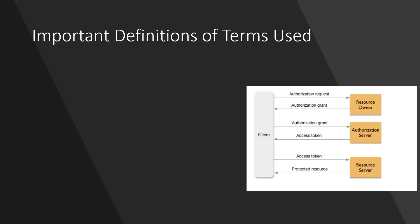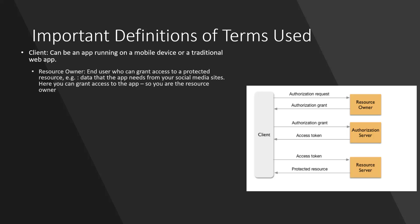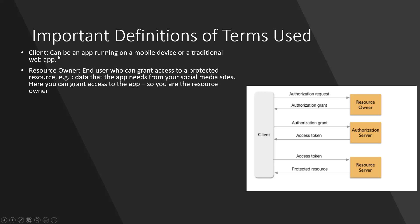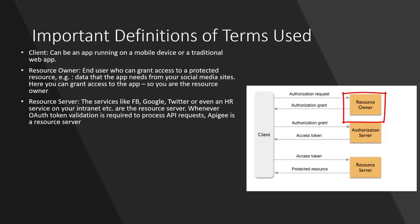Now let's see some important definitions of the terms used. The client can be an app running on a mobile device or a traditional web app. The resource owner is the end user who can grant access to a protected resource — for example, the data that the app needs from your social media sites. You can grant access to the app, so you are the resource owner.